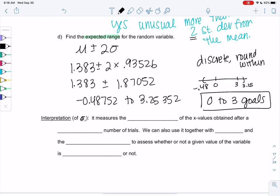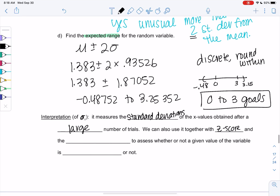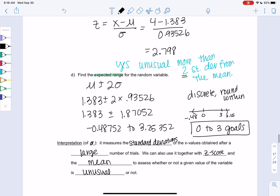So the interpretation of sigma. Remember, it measures the standard deviation of x values. And all of this has to do after a large number of trials. So anything can happen one time. The idea is this is what happens in the long run. And so the main thing we use it for is with z-score and mean to assess whether a given value of the variable is unusual or not. So that's really, we're not going to use standard deviation on its own. But we'll use it to basically decide unusual and expected range. So in the long run, most losing teams will be 0 to 3 goals. But anything can happen in a single game. So that's what I mean by a large number of trials. Let me know if you have questions.